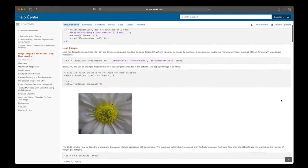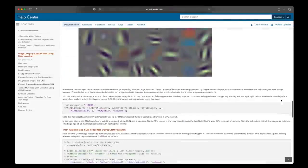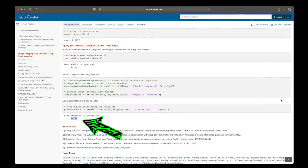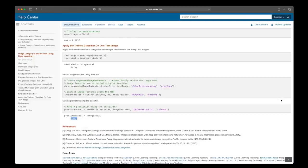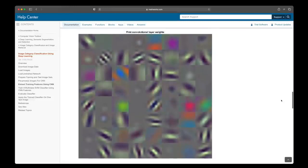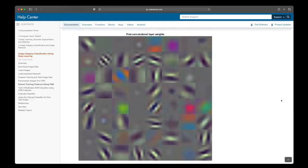The input image is a daisy. And if you apply the trained classifier on this test image, it does in fact return the label daisy. And if we scroll back up, what we're seeing here is a visualization of the first convolutional layer weights.